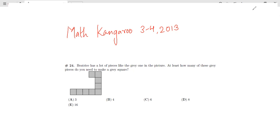Hello friends, today we will be doing Math Kangaroo level three and four year 2013 question number 24. The actress has a lot of pieces like the gray one in the picture. This is the piece. At least how many of these gray pieces do you need to make a gray square?